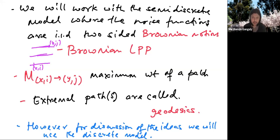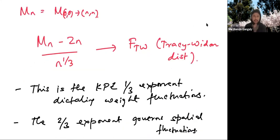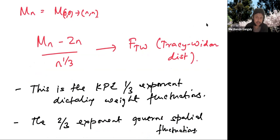Brownian LPP is where the functions on each level are IID two-sided Brownian motions. You take the increments along the path, that's the weight of a path, you look at the maximum weight — that's the notation M — and the extremal path which attains the maximum weight will be called a geodesic. In the particular case when the starting point is (0,0) and the ending point is (N,N), I'll denote this by the shorthand M_N. M_N is roughly 2N, so if you center by that number, the fluctuation is of order N^{1/3}. After dividing by N^{1/3}, it converges to the Tracy-Widom distribution, which is the limiting distribution for the largest eigenvalue of a random matrix.